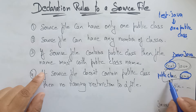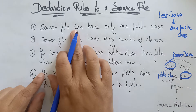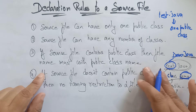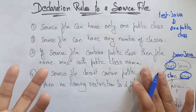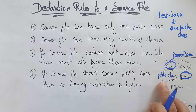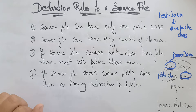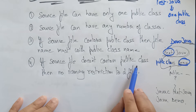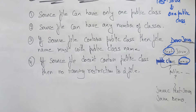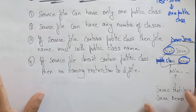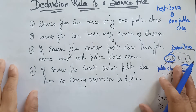To summarize: source file can have only one public class, and any number of non-public classes. You can write class demo, class sample, class employee, class ABC — any number of classes in demo.java. But if public is used, only one public class is allowed and its name must match the source file name. If the source file does not contain a public class, there is no naming restriction — you can name the file anything: test.java, student.java, lecturer.java.